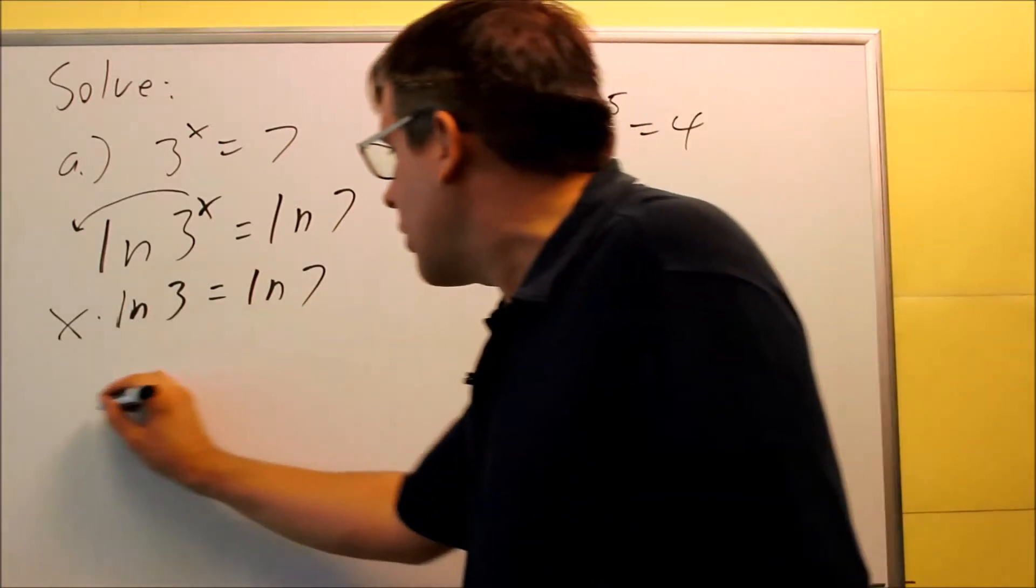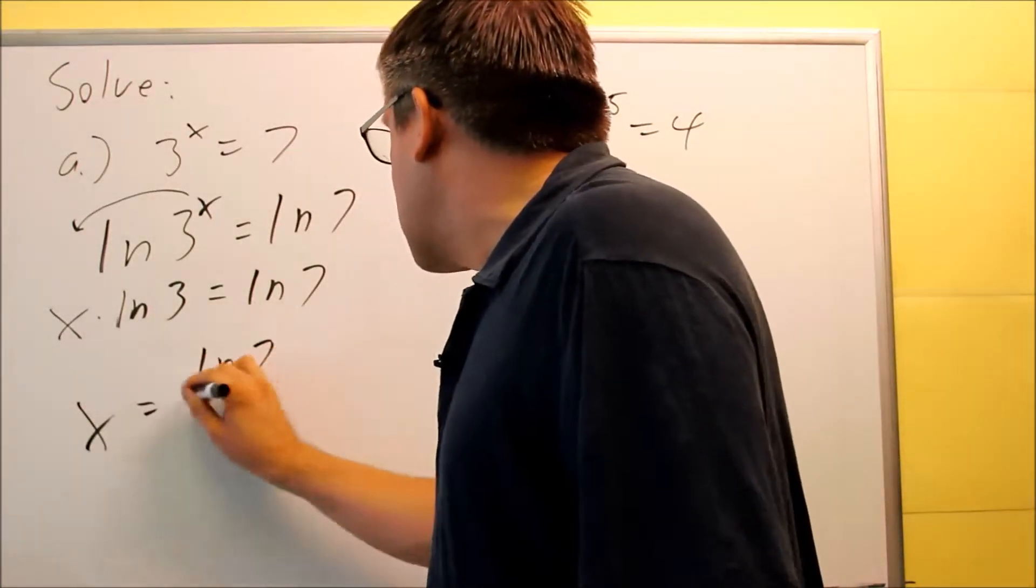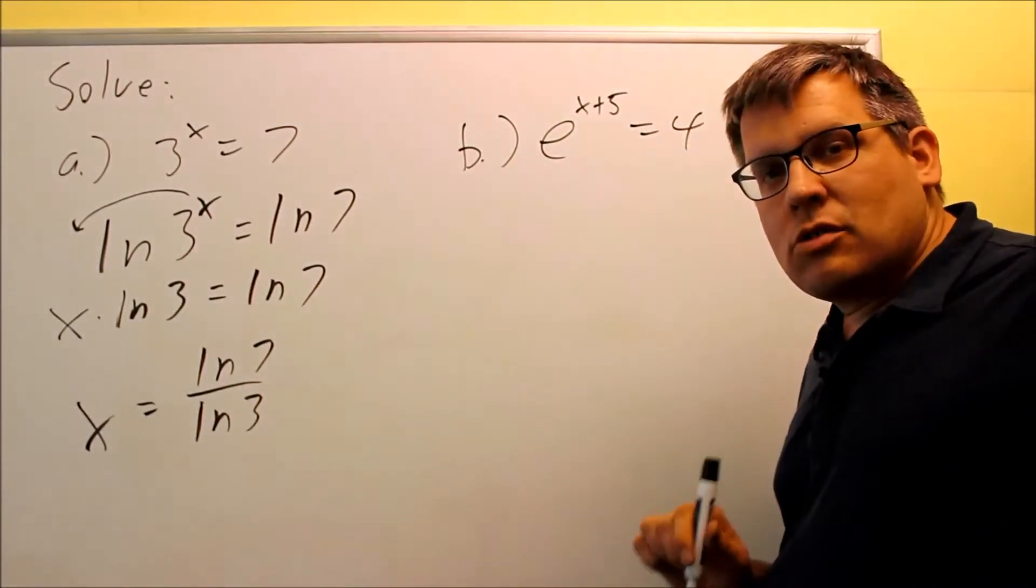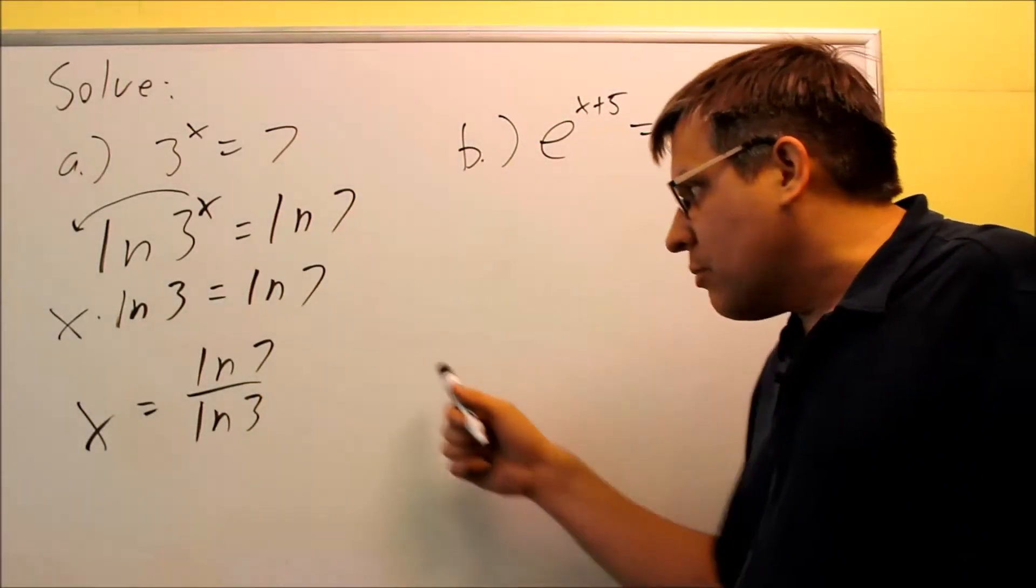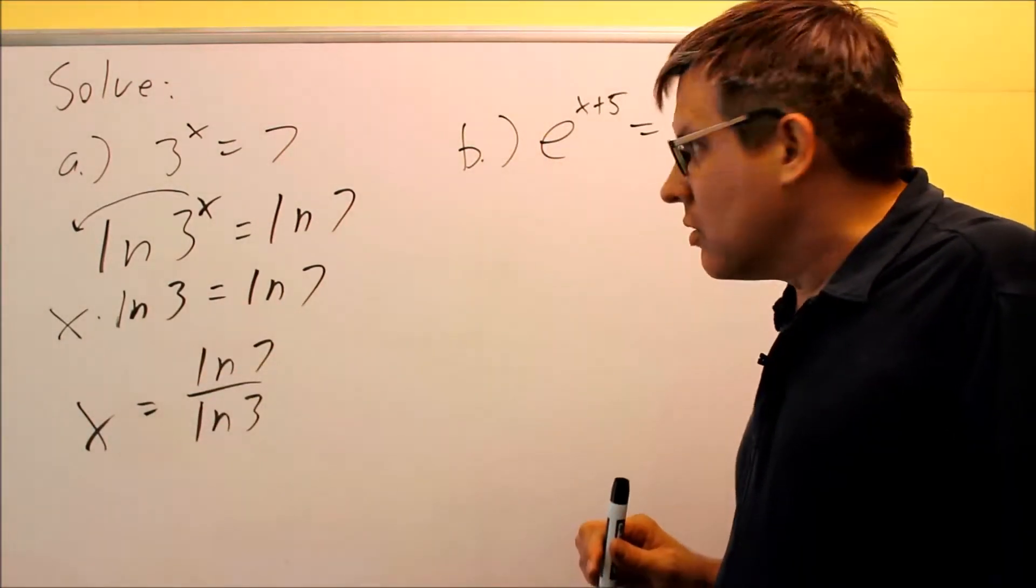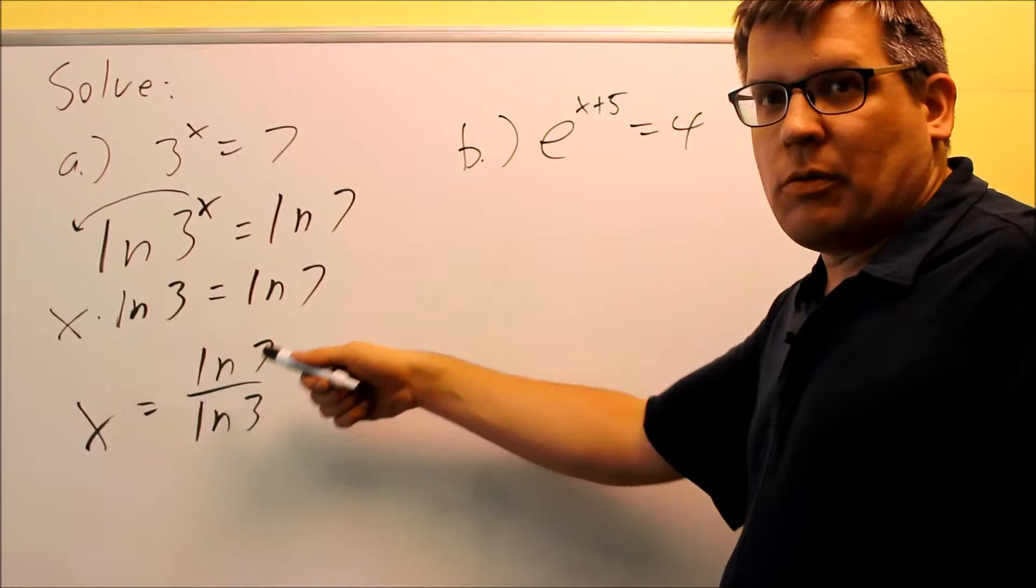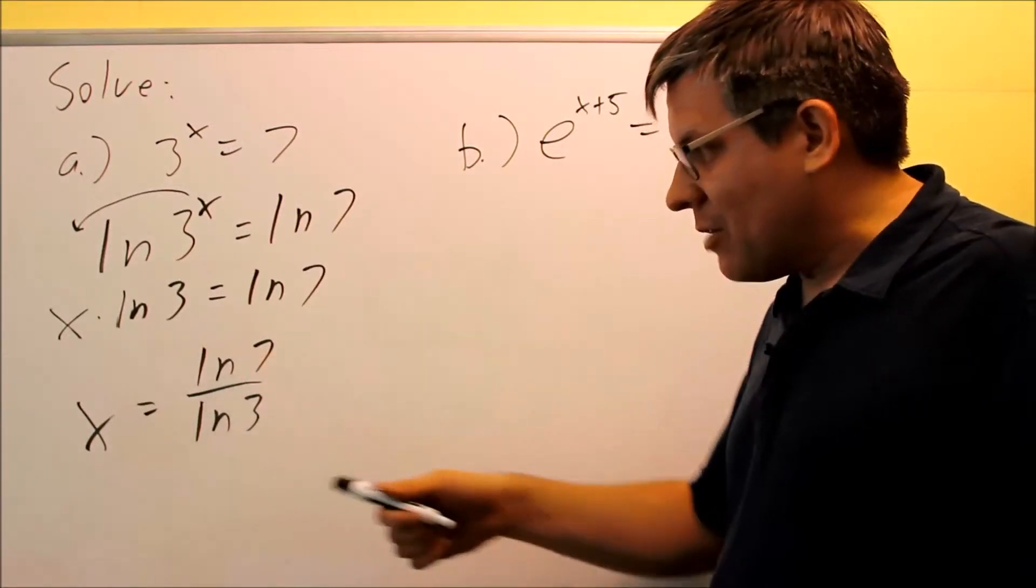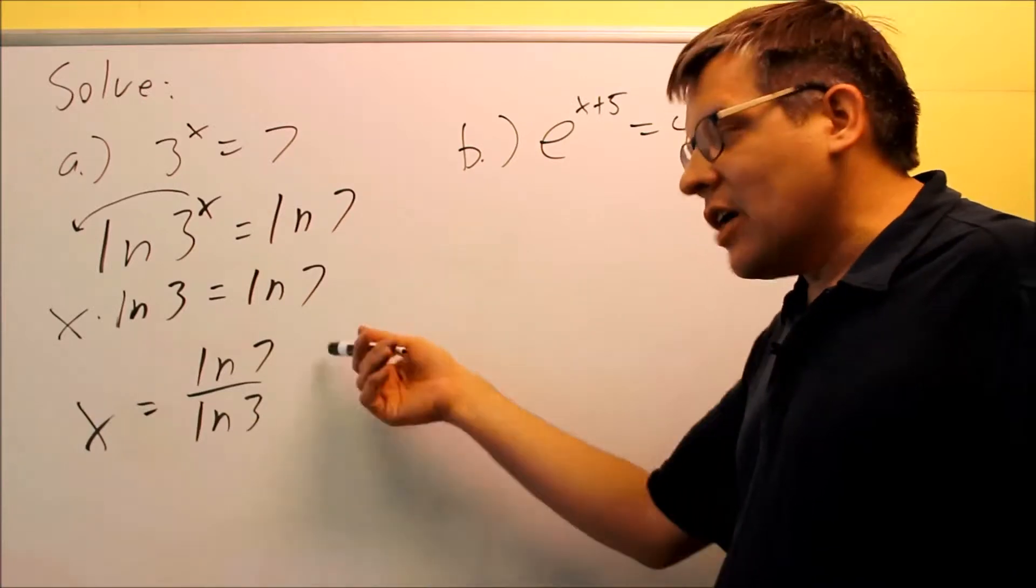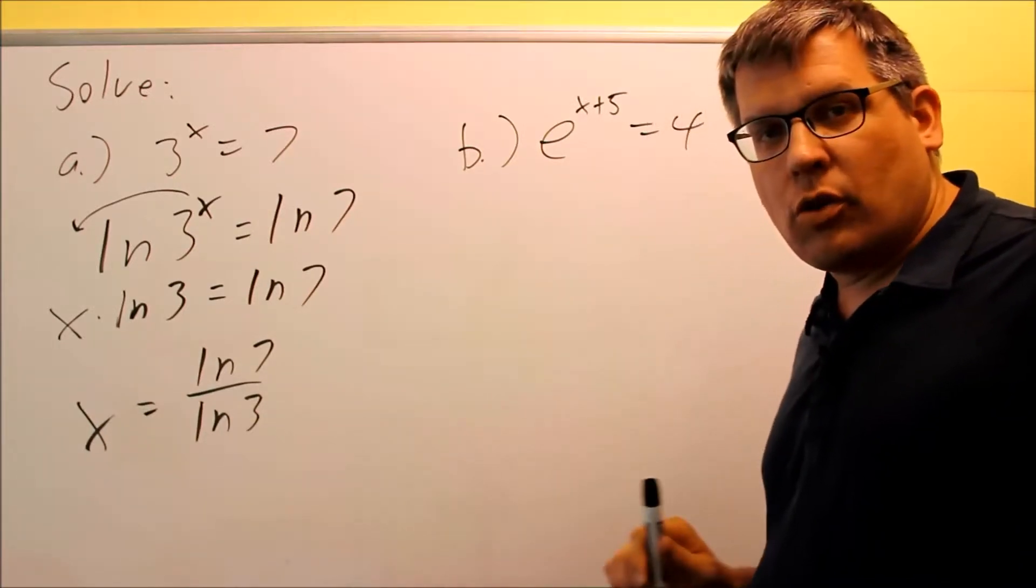So we divide both sides by ln 3 and we get ln 7 over ln 3. If we wanted to get an approximation, we could put that into our calculator. But this answer is acceptable just like that—this would be the exact answer. If you had both of these with a log base 10 top and bottom, that's perfectly fine too. That would be exactly the same result as a decimal, so either one would be acceptable.